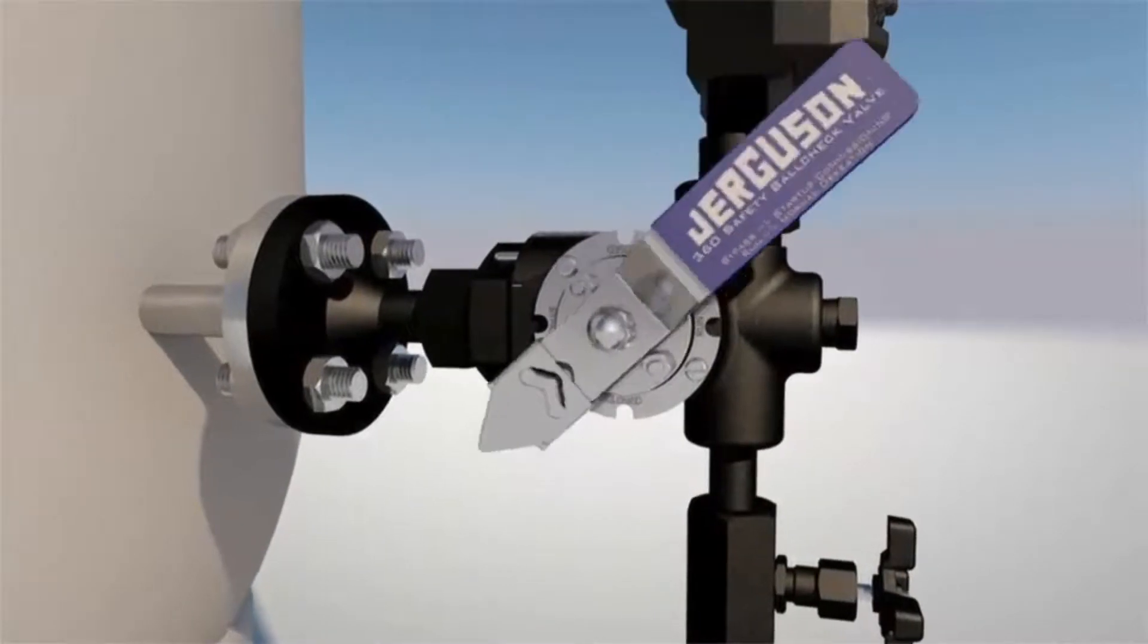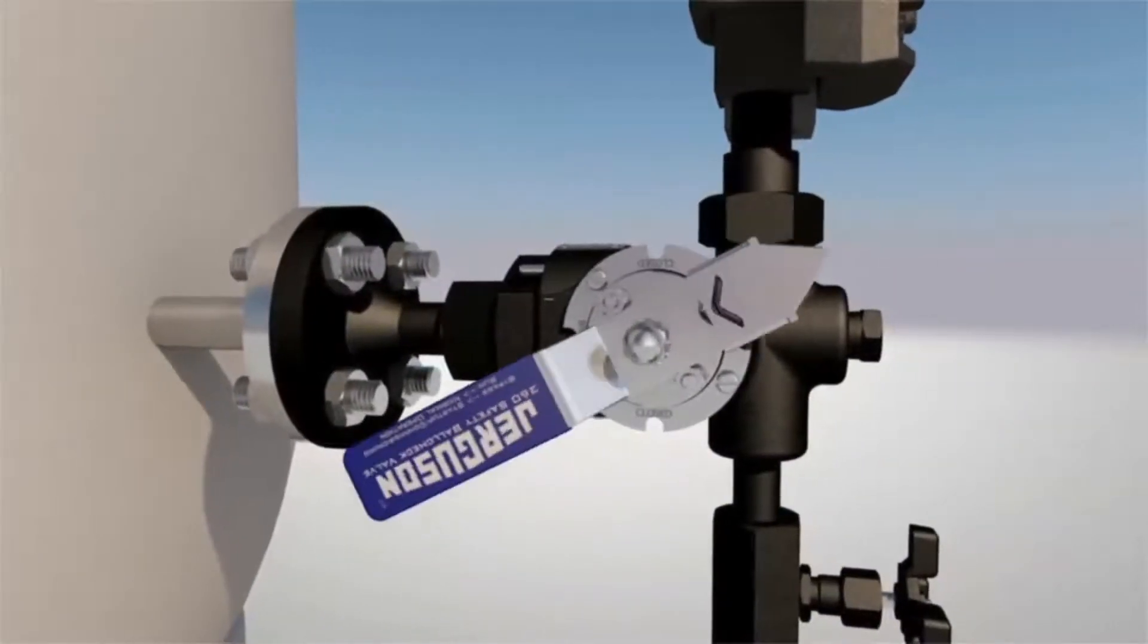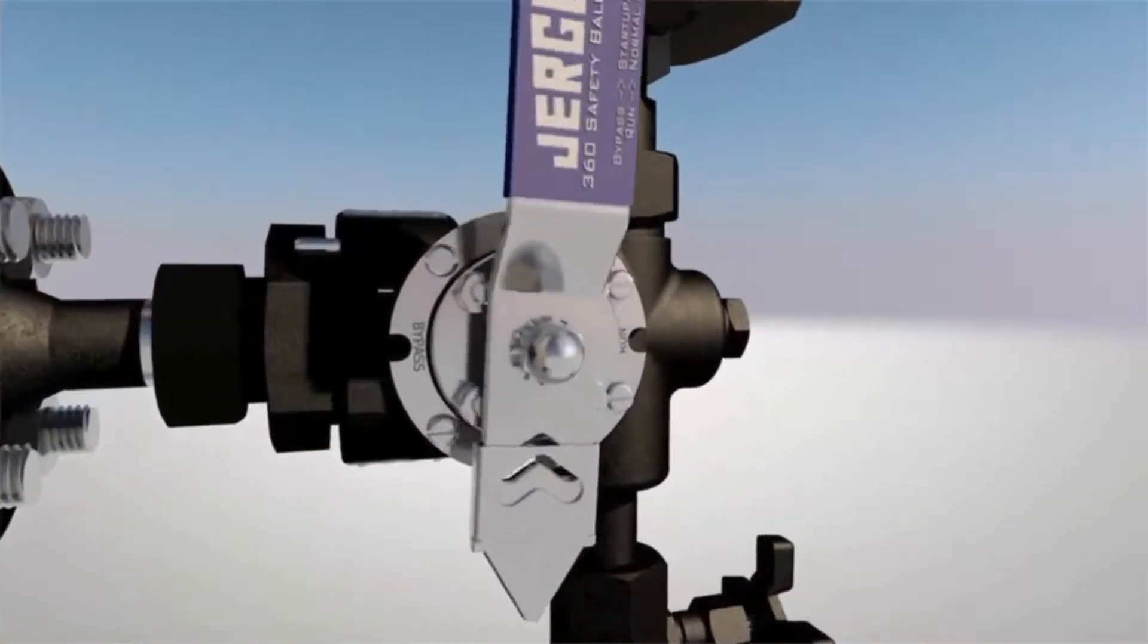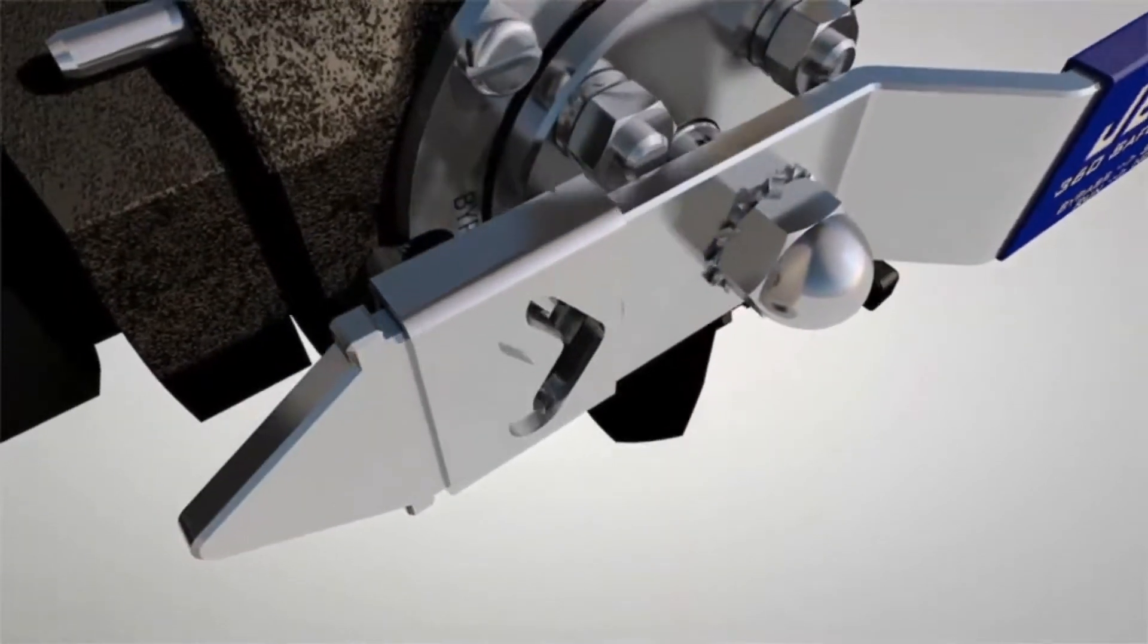The patented ball check design provides clear status with its quarter turn position visible handle. This unique handle design points to the mode of operation and is complete with locking pin to secure its position.